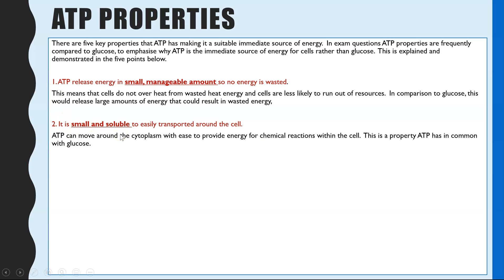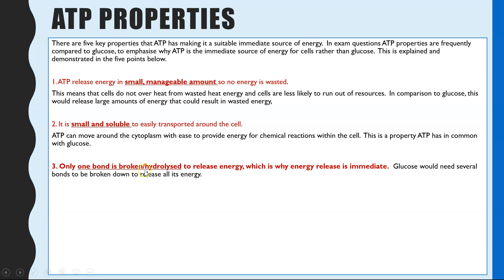Second, ATP is a small and soluble molecule, so it can easily be transported around a cell — which is also true of glucose. This is useful because wherever ATP is created, such as in the mitochondria, it can still be transferred to other parts of the cell for metabolism. Third, only one bond has to be hydrolysed for ATP to release energy, making it an immediate source, whereas glucose requires several bonds to be hydrolysed, taking much longer.